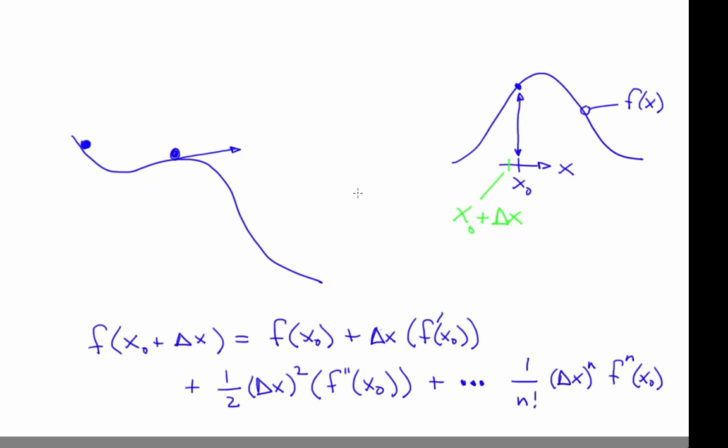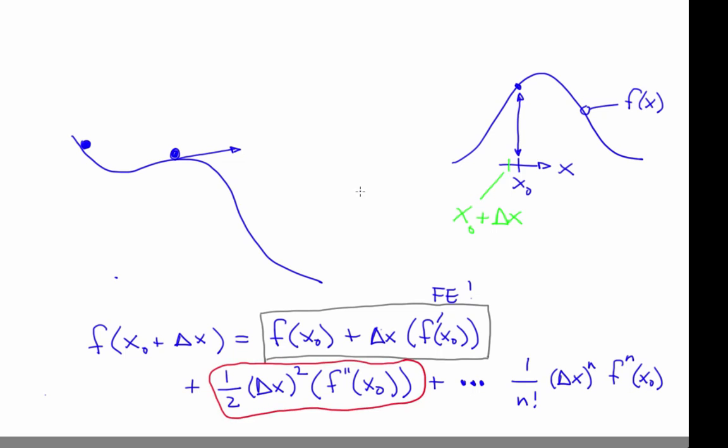Here's the formula. For the nth term, the pattern looks like this. Forward Euler is essentially the first two terms in that series, and that actually gives us a way to estimate the size of the error that forward Euler makes. To first approximation, it's the next term in the series — the first one we didn't use.